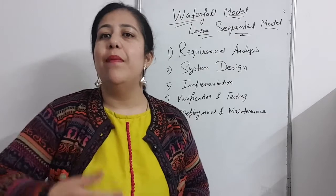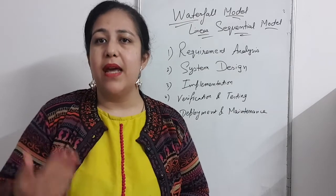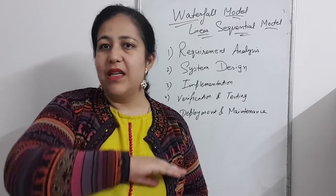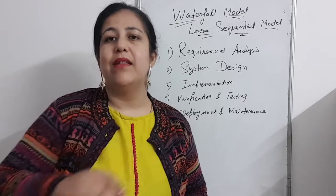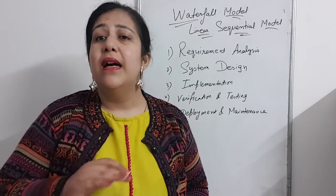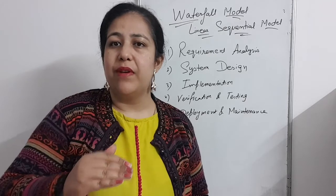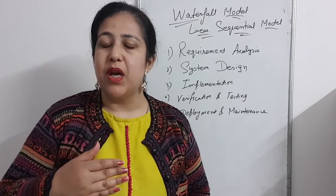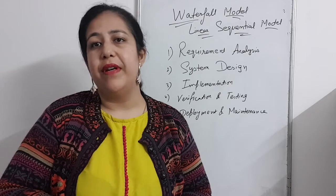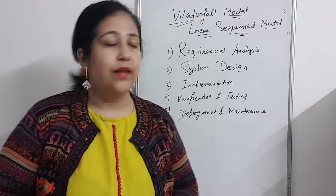What do we mean by linear sequential model? It goes sequential and linear — meaning one after one. So whatever phases there are, they happen one after one. You can't go back until one phase is finished. Overlapping of phases does not happen — one phase will finish, then the second, then the third. That's why it's called the Waterfall Model or linear sequential model.